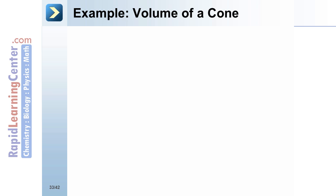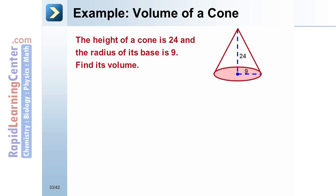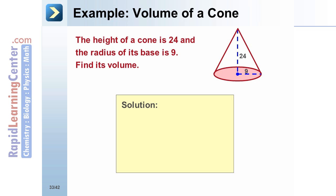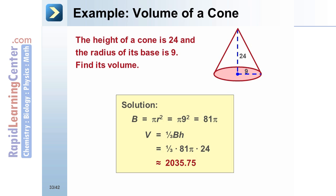Example: The height of the cone is 24 and the radius of its base is 9. Find its volume. Substitute the radius into the area formula for the base; the area of the base is 81 pi. Substitute into the volume formula: V equals one-third times 81 pi times 24. Simplify to get the volume of the cone, which is about 2,035.75.